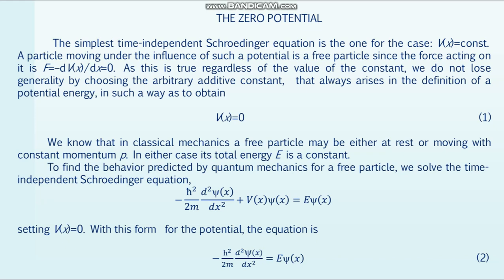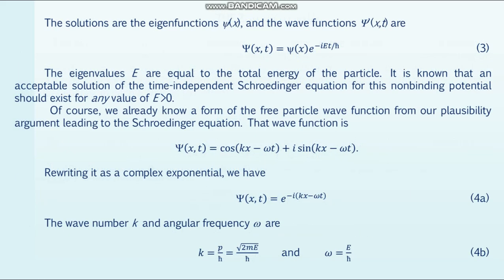To find the behavior predicted by quantum mechanics for a free particle, we solve the time-independent Schrödinger equation. Setting V(x) equal to zero, the equation becomes formula number 2. The solutions are the eigenfunctions ψ(x), and the wave functions ψ(x,t) are given by formula number 3. The eigenvalues E are equal to the total energy of the particle.